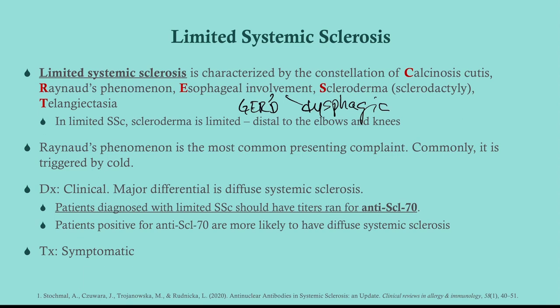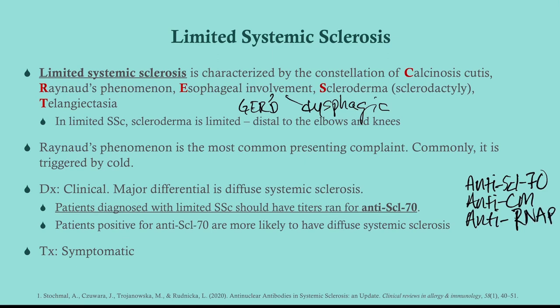After you suspect somebody has a systemic sclerosis, you want to get anti-Scl-70 and anti-centromere. You can also get anti-RNA polymerase. Throw in an ANA as a general screen, since some patients won't have any of the specific antibodies but can still have systemic sclerosis. You might also add a rheumatoid factor. If you're suspecting any kind of systemic sclerosis, get a BMP to check renal function — that's a good start for your orders.